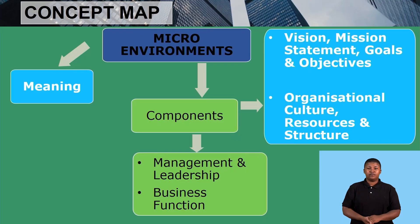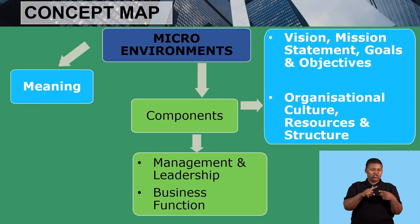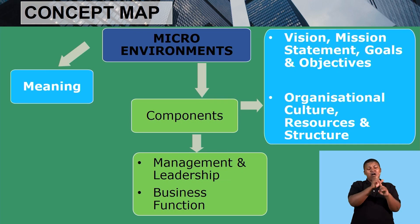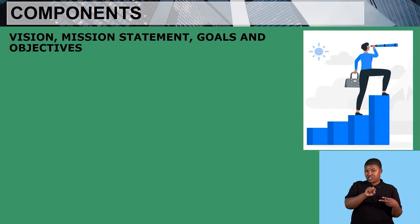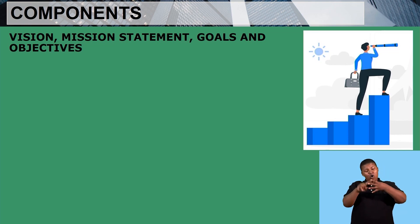Now that we know the meaning of the micro environment, let's look at a few of its components shown in the blue block: vision, mission statements, goals and objectives, as well as organisational culture, resources, and structure. The vision, mission statements, objectives, and goals are four concepts but only one component — they are classified together as one thing in the micro environment.